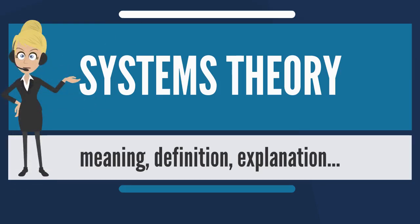Systems theory or systems science is the interdisciplinary study of systems in general with the goal of discovering patterns and elucidating principles that can be discerned from and applied to all types of systems at all nesting levels in all fields of research.